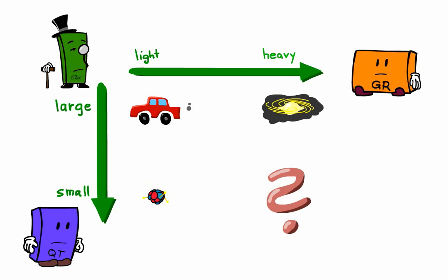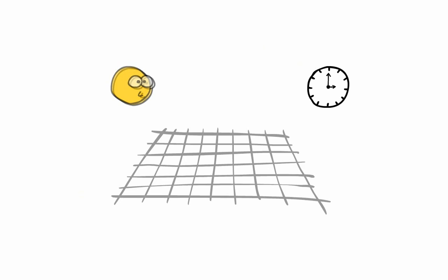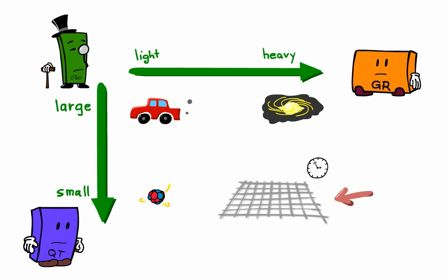But what about situations in which objects are involved that are very heavy and very small at the same time? Then the quantum fuzziness not only of particles, but of space and time itself should become important. To describe such a situation, we need a theory of quantum gravity, which combines both quantum theory and general relativity.